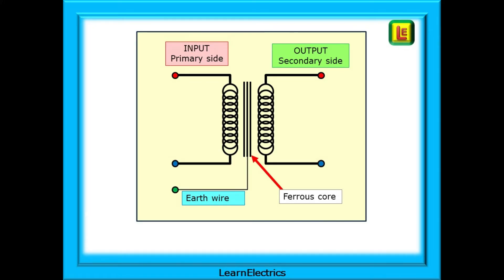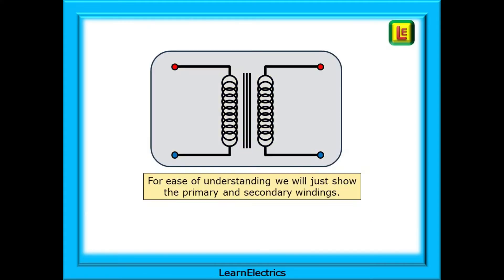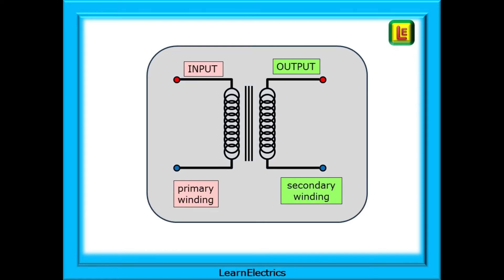As well as the primary and secondary wiring connections there will usually be an earth connection to the transformer. For the purposes of clarity and ease of understanding we've left the earth connection off the drawings in this video. There is a primary winding and a secondary winding wound onto formers that are arranged to be physically close to the ferrous core for maximum electromagnetic transfer of energy.